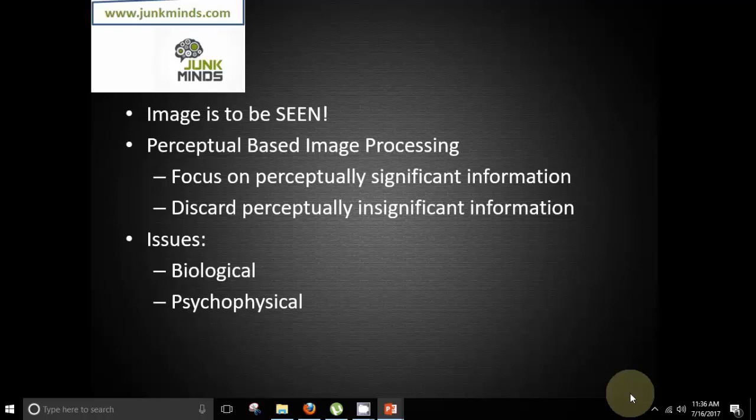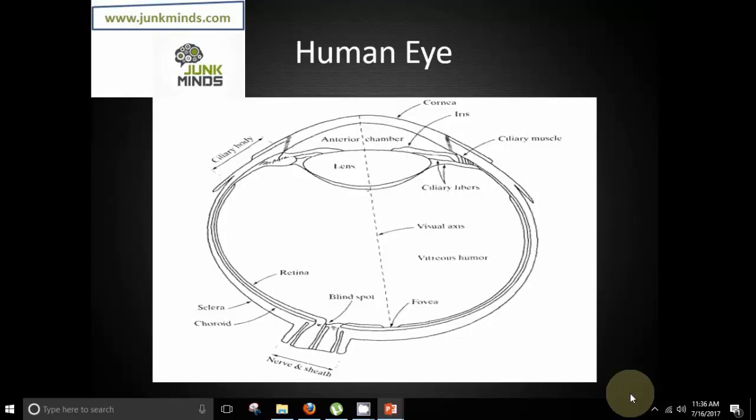The issues related to it are biological issues and psychophysical issues. Now talking about the human eye, the human eye basically is constructed of many different things. We will be talking about different parts in detail.